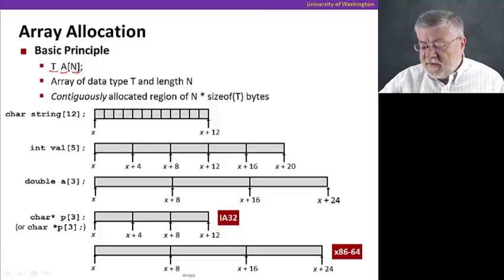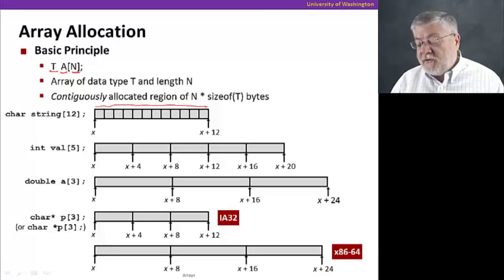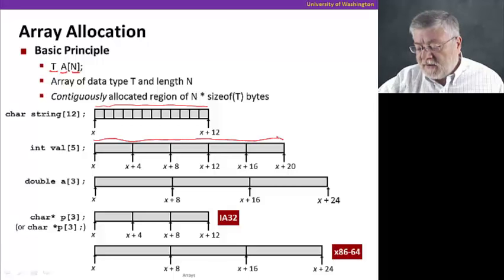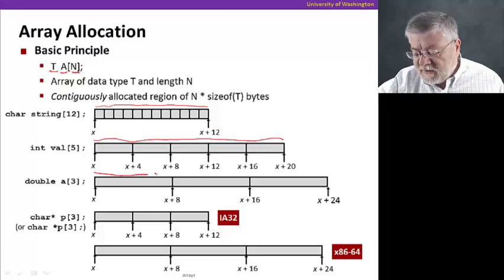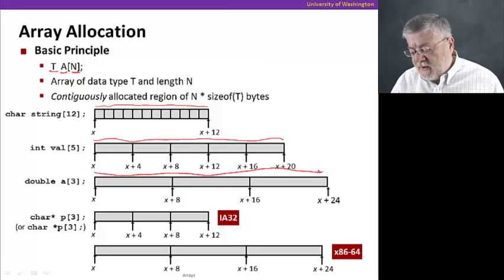Let's take a look at some examples. Here's a character array called string that has 12 elements. You'll notice that each is one byte, and they're allocated one right after the other in memory. Here we have an array of ints with 5 elements called val. It takes up 20 bytes in memory from some starting address. A double array, the elements are 8 bytes each, but they're always contiguous, always right next to each other in memory.